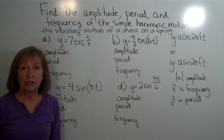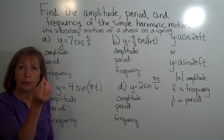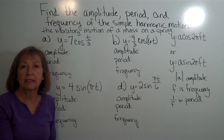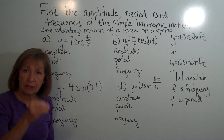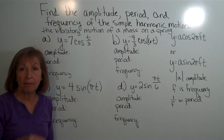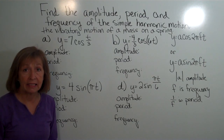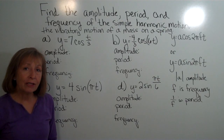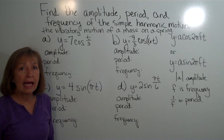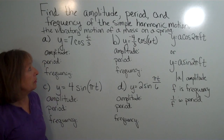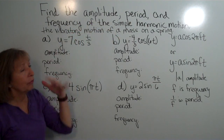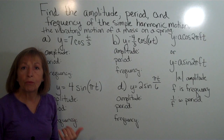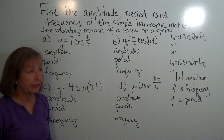When we look at the vibratory motion of a mass at the end of a spring, and we have a displacement away from its equilibrium and let go, and think about how that mass is bobbling up and down at the end of that spring, we can actually look at modeling this motion by the use of amplitude, period, and frequency application with the cosine or the sine function.